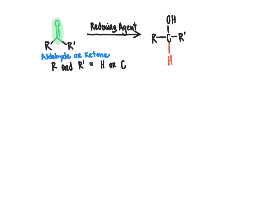When we think about a carbonyl-containing compound relative to an alcohol, we would describe the aldehyde or ketone as being a more oxidized molecule. The reason it's more oxidized is it has more bonds between carbon and an electronegative atom — oxygen. So it has more bonds between C and X, where X is an atom with equal or greater electronegativity than carbon.